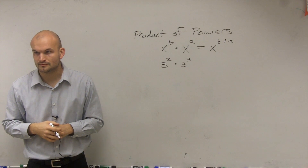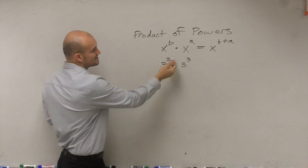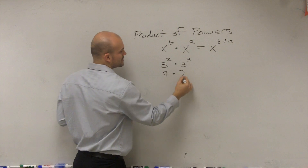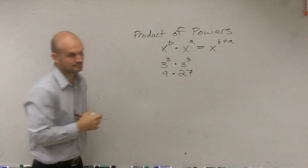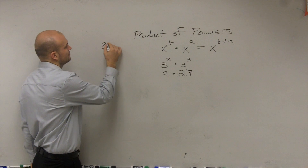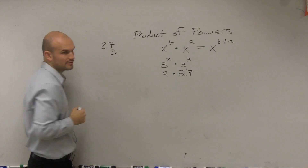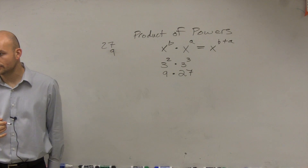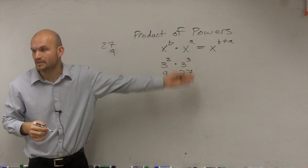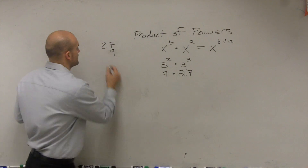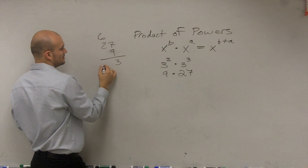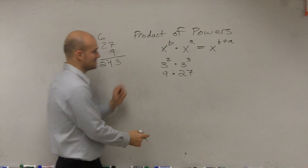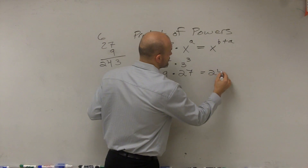In reality, what this is going to be is 3 squared, which we know is 9, times 3 cubed, which is 27. And 3 cubed — 3 times 3 is 9, times 3 would be 27, right? So 9 times 27 is equal to 243.